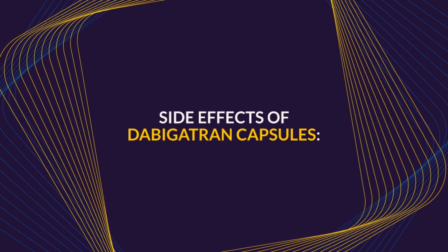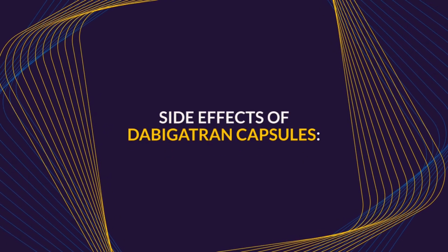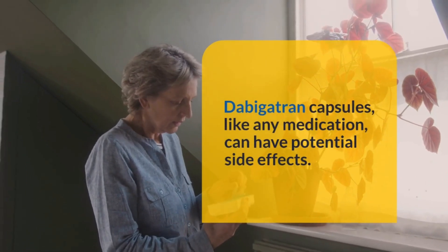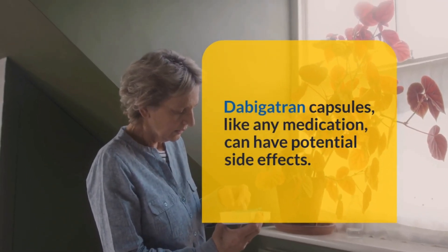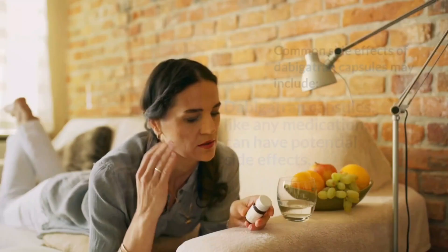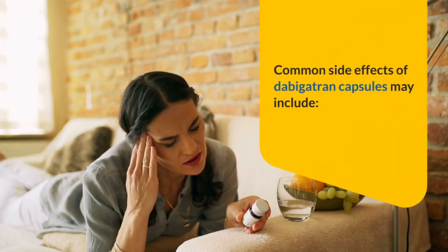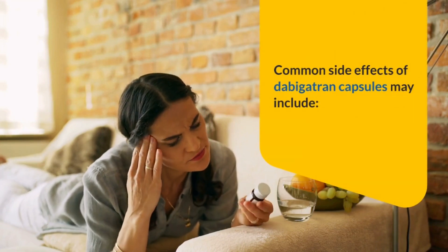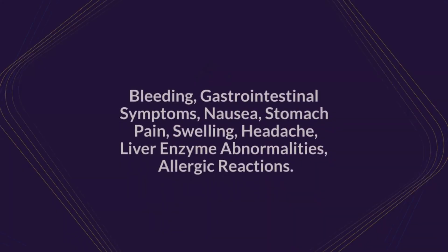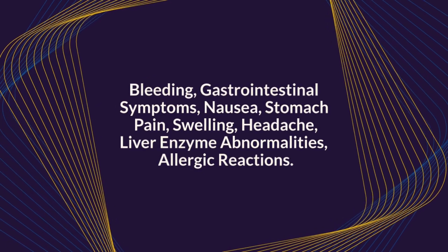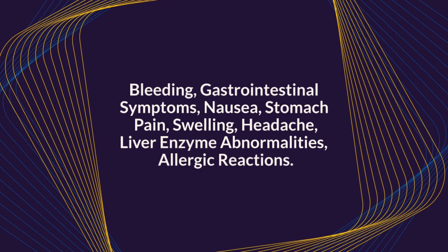Side effects of dabigatran capsule. Dabigatran capsules, like any medication, can have potential side effects. Common side effects of dabigatran capsules may include bleeding, gastrointestinal symptoms, nausea, stomach pain, swelling, headache, liver enzyme abnormalities, and allergic reaction.